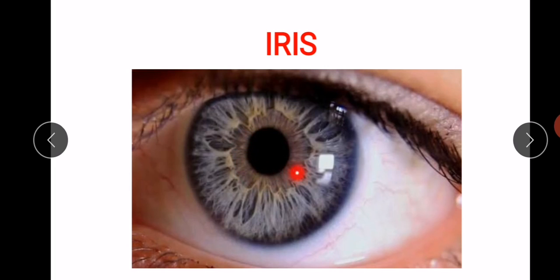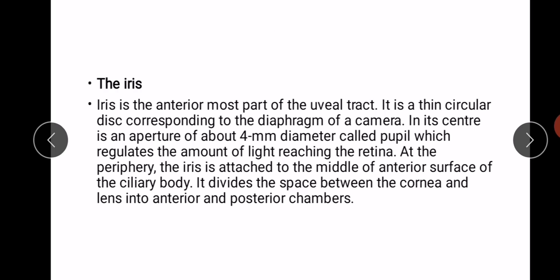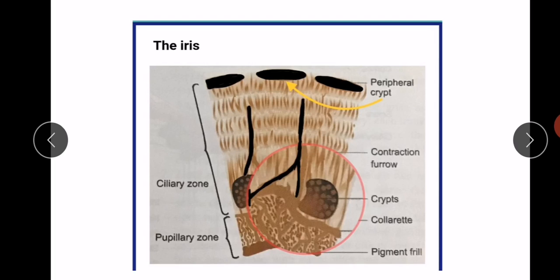At the periphery, the iris is attached to the middle of the anterior surface of the ciliary body. It divides the space between the cornea and the lens into anterior and posterior chambers. The iris has two zones: a ciliary zone and a pupillary zone.